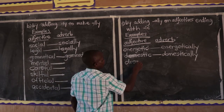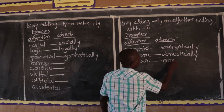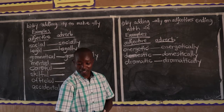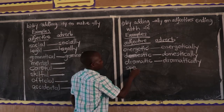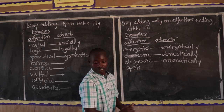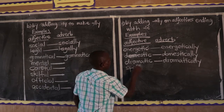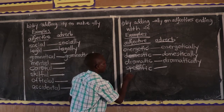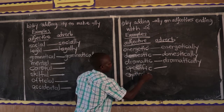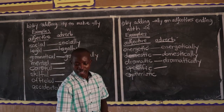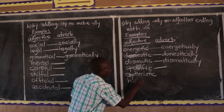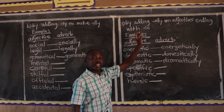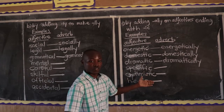You can now complete these words: 'specific' — I believe you can complete this one well. 'Optimistic' — complete that. 'Heroic' — when you look at the rule, adjectives ending with -IC, you just add -ALLY. I believe you can complete these words well.